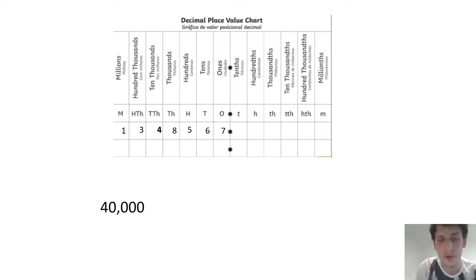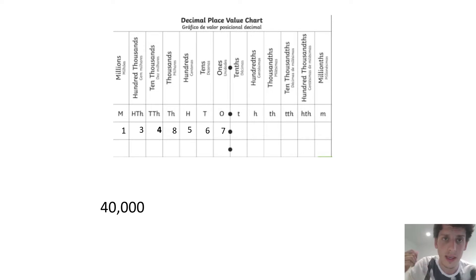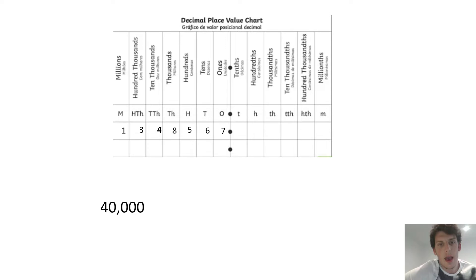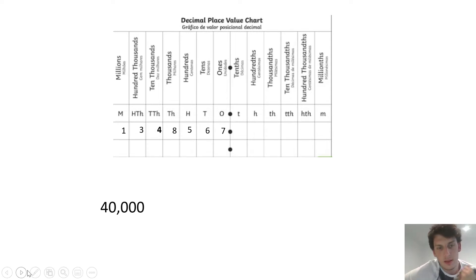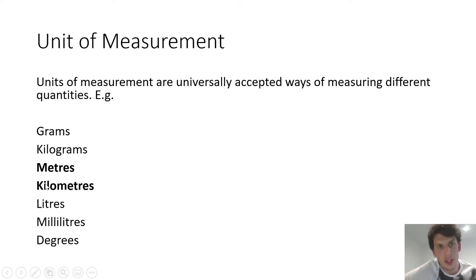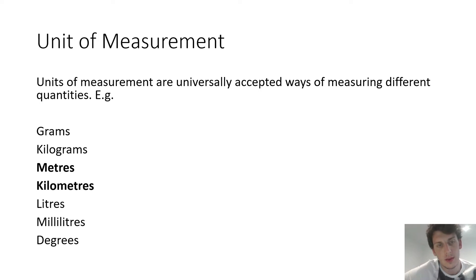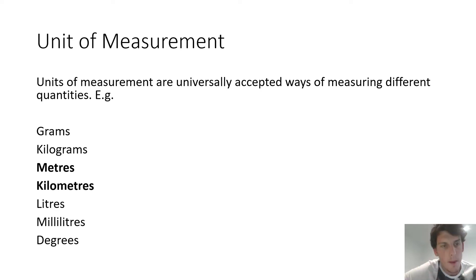Well done if you got that right. If you didn't, don't worry, but you need to email me so I can give you some extra support. So we're now going to move to the main part of our lesson. Units of measurement are universally accepted ways of measuring different quantities. Examples include grams, kilograms, meters, kilometers, liters, milliliters, and degrees, and there are many more.